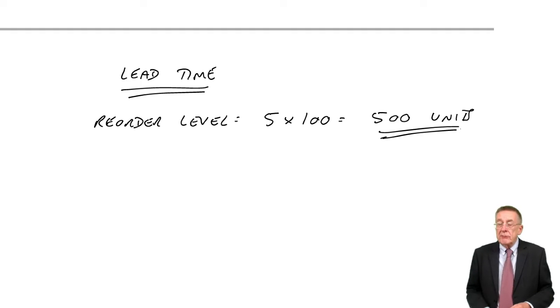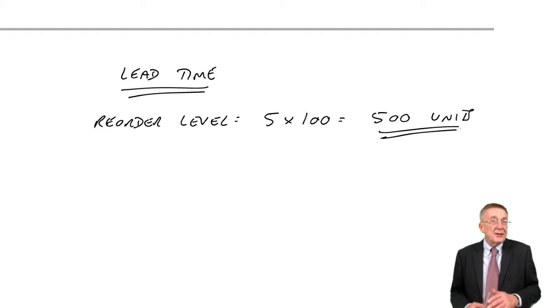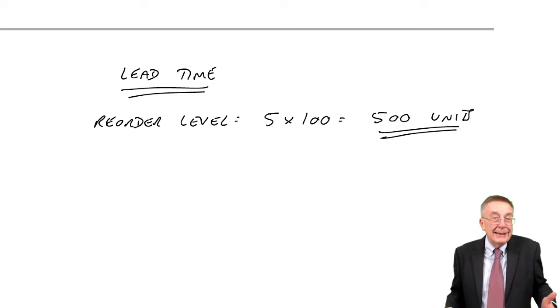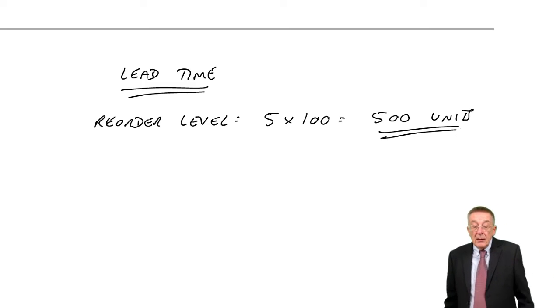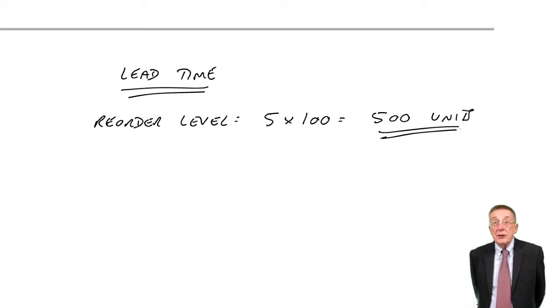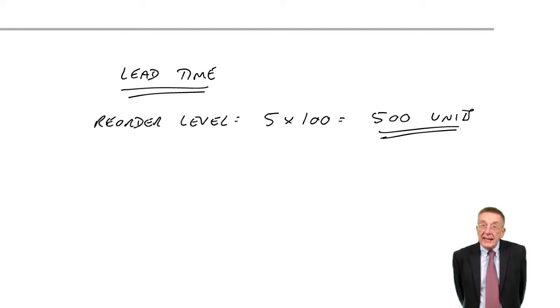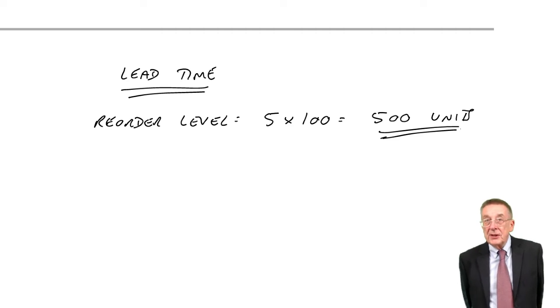So if we were to start and reorder when we had 500 units left, that should on average be okay. But there could be times when customers wanted a bit more than 100 a week and we'd still end up running out. And so to be safe, we may decide to reorder when we've got a bit more than you think you'll need.